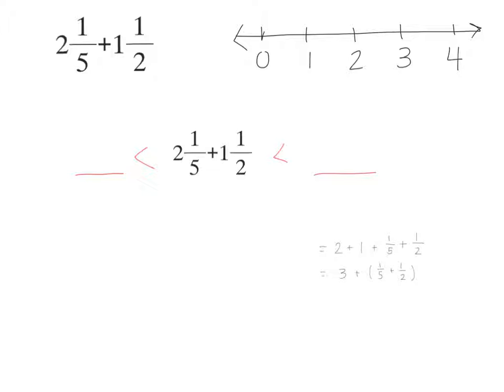If I have 2 and 1/5, that's kind of like here, right? If I'm going to add 1 to it, I'd be right here, and if I add another half to it, I'd probably be like right here. So what two whole numbers will our answer be in between? If my answer is going to be right here, what two whole numbers is that between on the number line? 3 and 4.